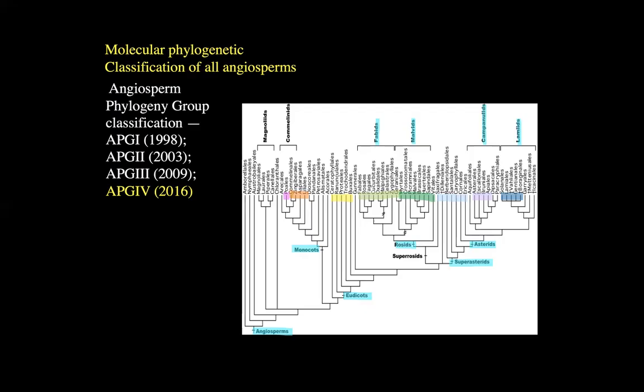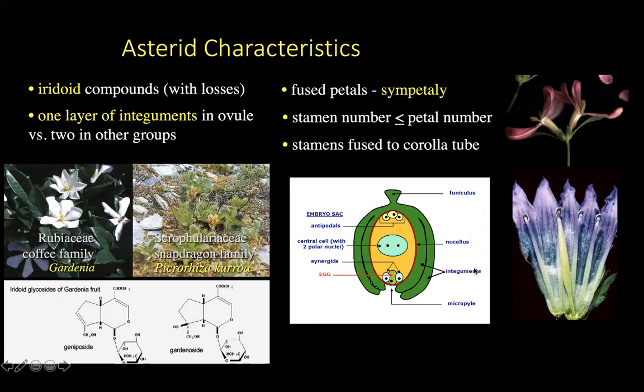What defines this broadest asterid group, including the super asterids? The big one is fused petals, or sympetalae — fusion particularly within the petals, though we can get fusion within the other whorls as well. You're really not going to have separate pistils per flower in this group. Stamen number drops down, being equal to at most — or sometimes less than — the petal number. That's the big trend: reduction and fusion. Usually the stamens are also fused to the corolla at least at the base, with the filamentous region fused as well.